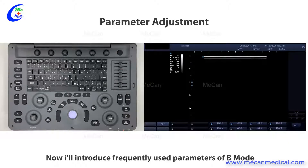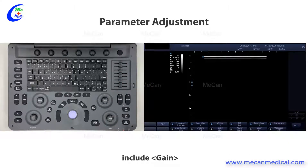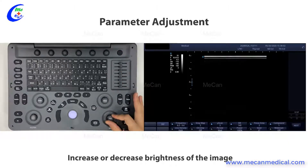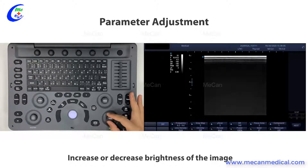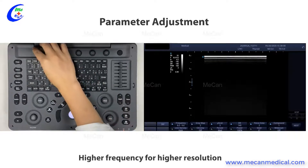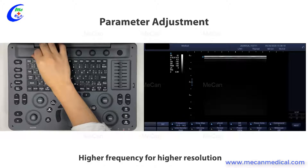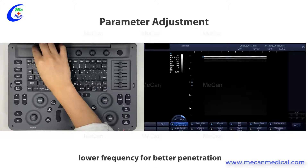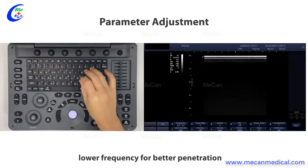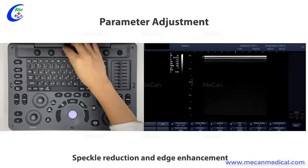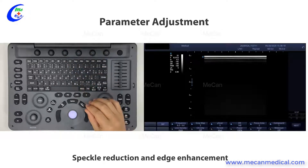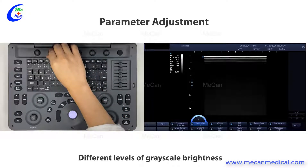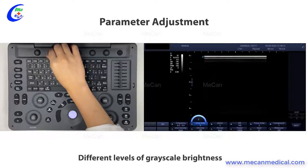I will introduce frequently used parameters of B-mode. Gain: increases or decreases the brightness of the image. Frequency: higher frequency for higher resolution, lower frequency for better penetration. Muse scan: speckle reduction and edge enhancement. Gray map: different levels of grayscale brightness.